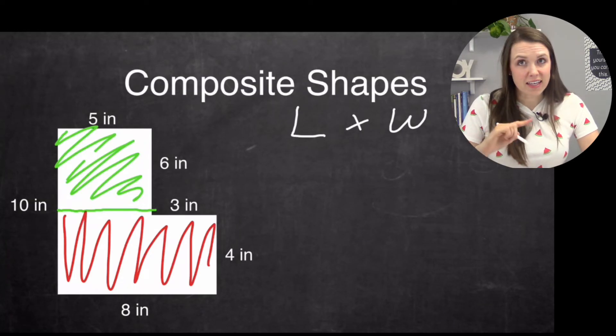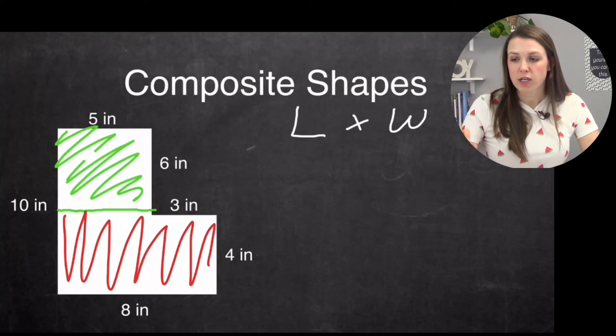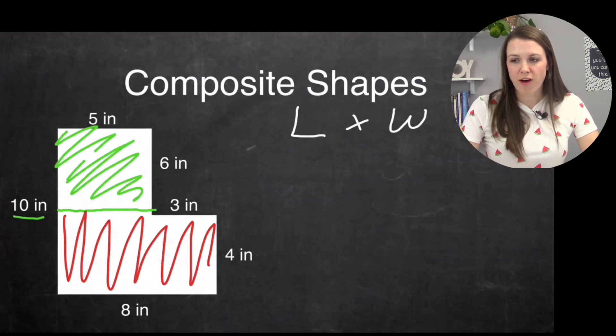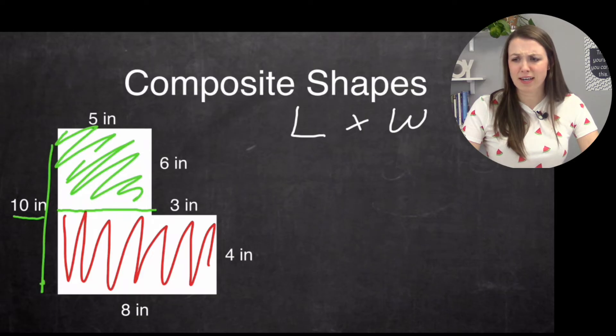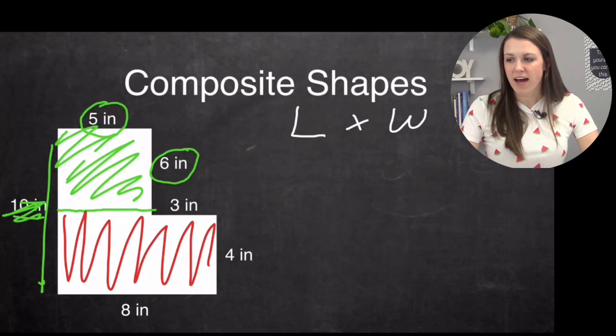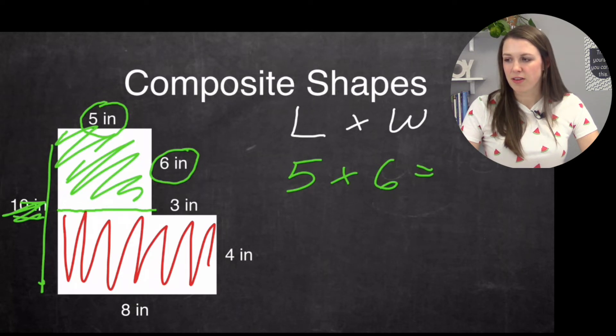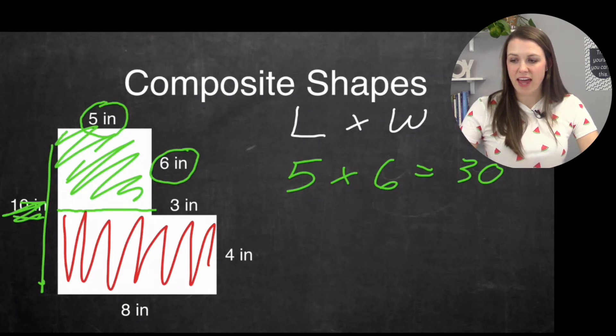So length times width. And you want to really make sure that you're looking at the correct numbers. So if you look here at this 10 inch, well, if I use that, oh my goodness, that goes all the way down, that's not what I want. So here, I'm going to use my five inch and my six inch. So I have here the length is five times the width. I actually am doing it backwards, but it's fine. So five times six is simply 30.